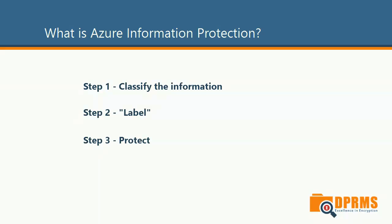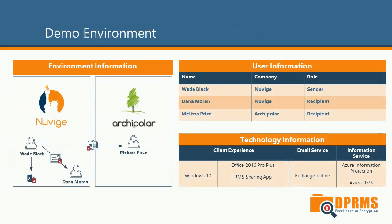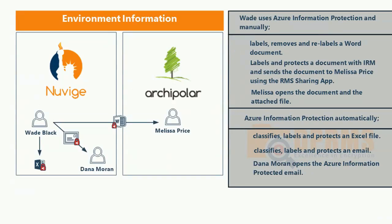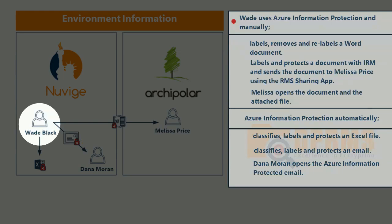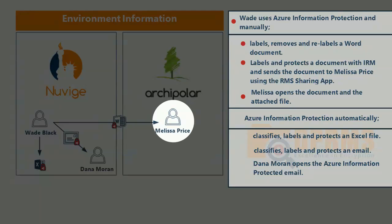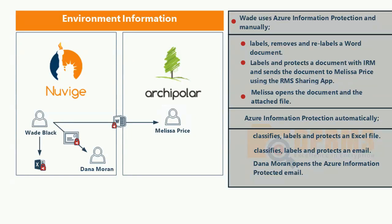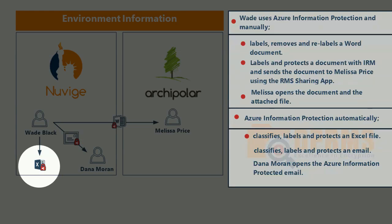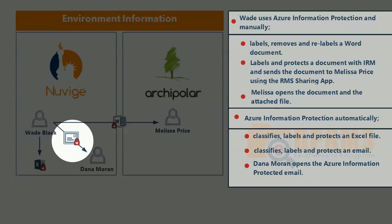All these steps can be done manually, but they can as well be configured to run automatically. Let me show you how this works. We have prepared a demo environment with two companies: NuVage and Archipolar. We will begin by showing you how Azure Information Protection works manually. Wade Black will label an award document and then remove the label. He will then label and share a document with Melissa Price in Archipolar. Melissa will then open this document. We will also show you how Azure Information Protection works automatically — first with an Excel document classified and protected automatically, and then how this works when sending an email.